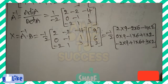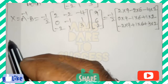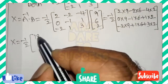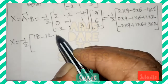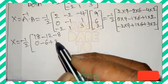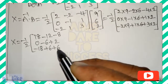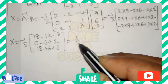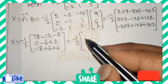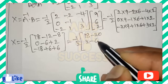Simplifying carefully: X equals (−1/2) times [18 − 12 − 8 / 0 − 6 + 2 / −18 + 6 + 6]. That gives (−1/2) times [−2 / −4 / −6]. Note: 18−12=6, 6−8=−2; 0−6+2=−4; −18+6+6=−6.